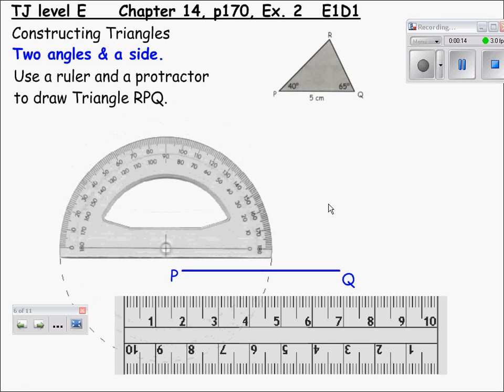The triangle we wish to make an accurate drawing of is in the top right hand corner of the page, triangle PQR. Angle RPQ is 40 degrees and angle RQP is 65 degrees. Line PQ is 5 centimeters long and this is all the information we have been given.